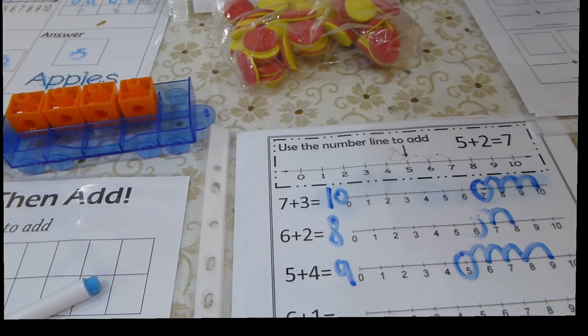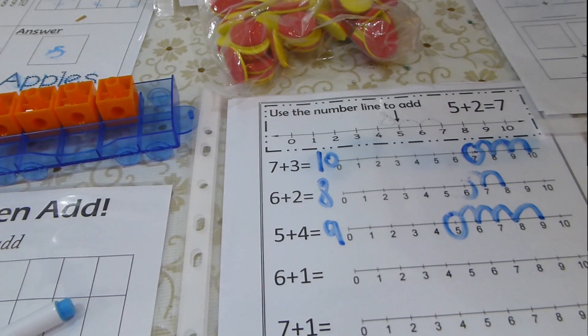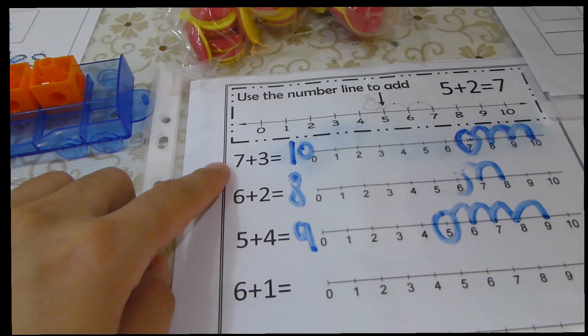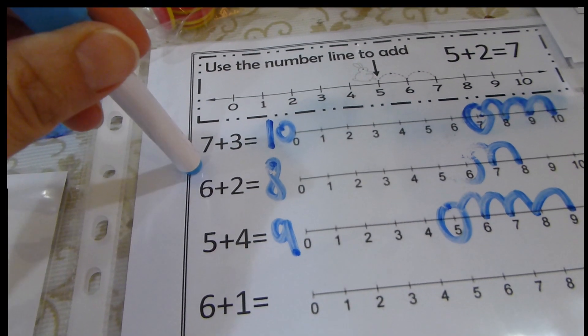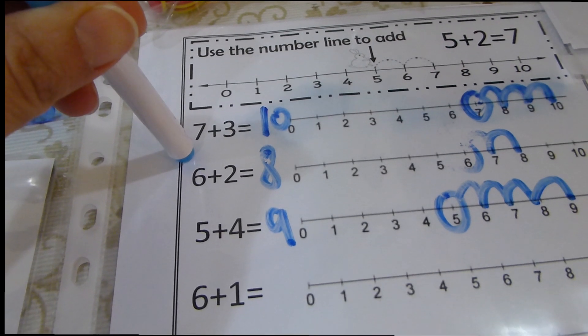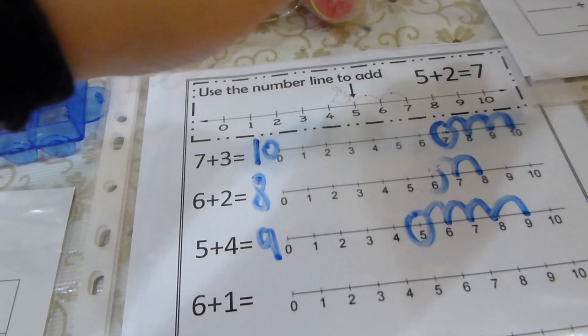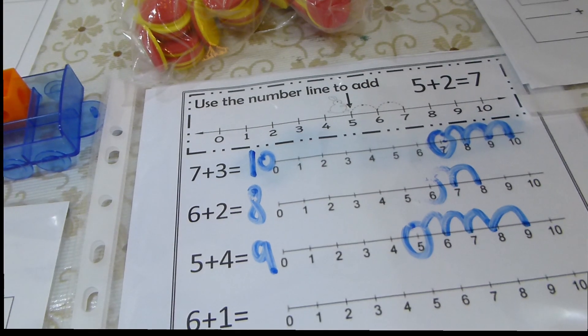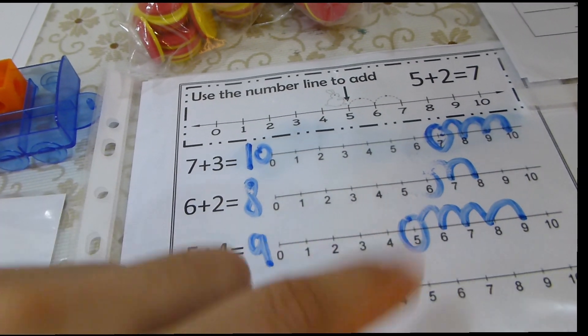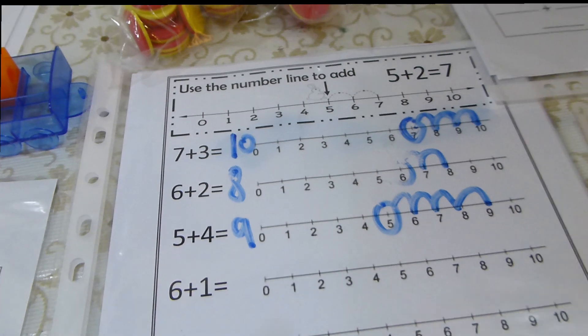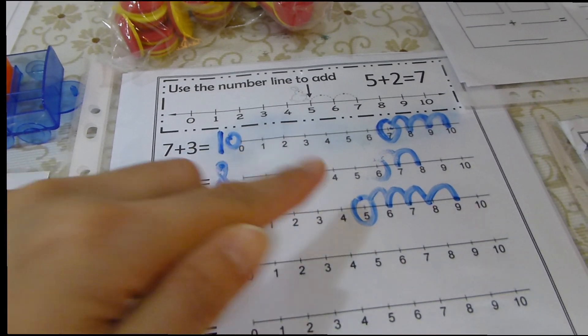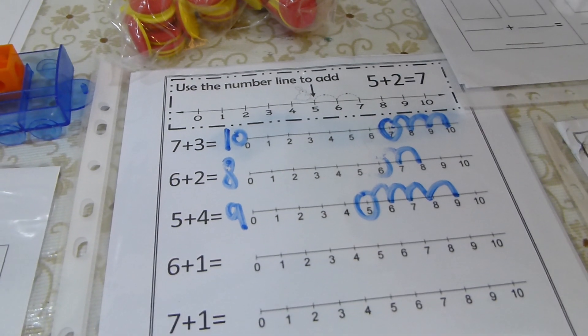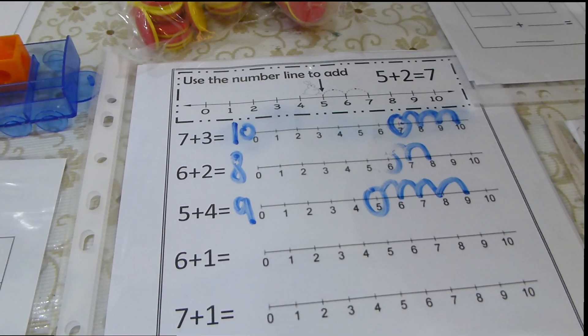What the child will be asked for is to find the bigger number, which is 7 here in this equation, circle it, and then he will try to hop 3 times forward because this is an addition. So 7 plus 3 equals 10. 6 plus 2 equals 8. He will circle 6 and he will hop 2 times forward because this is an addition and he will find the sum.